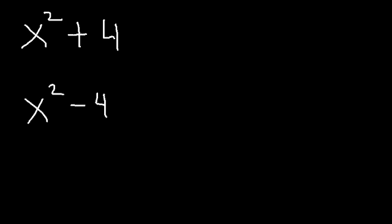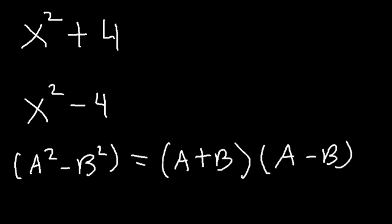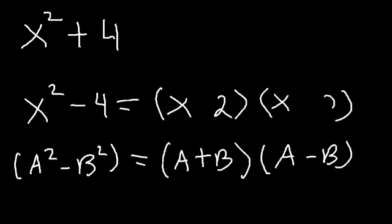Take a minute and factor those two examples. If you have a difference of perfect squares, let's say a squared minus b squared, to factor it simply: a plus b times a minus b. The square root of x squared is x, the square root of 4 is 2, one is positive and the other is negative.